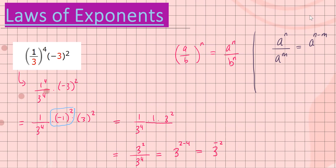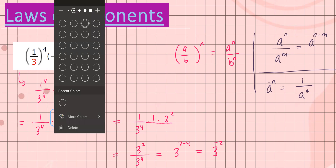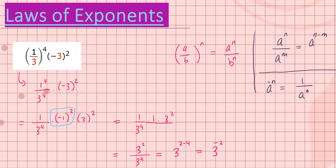Now we have to make the exponent positive. From laws of exponents, if you have a to the negative n power, that's simply one over a to the positive n. So I can write three to the negative two as a fraction and reciprocate: that's one over three to the positive two. Evaluating, that's one over three times three, which is nine. So one ninth will be our final result for this expression.